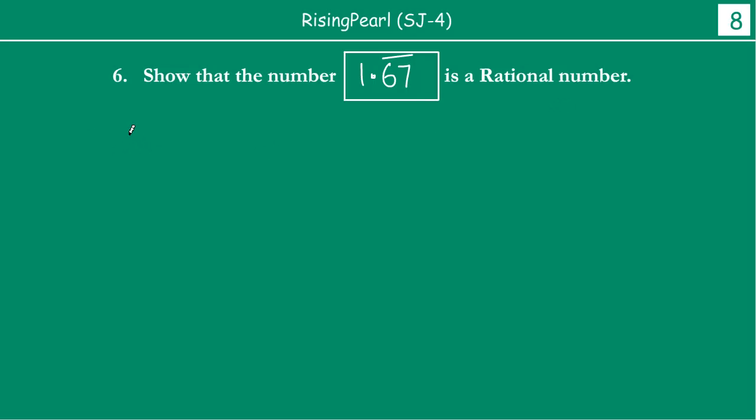So again, how are we going to handle this? We are going to say, well, let x equal 1.67 bar, and this means it is like 1.676767... goes like this. Because the bar here is not only 7, it is not only 6, it is both 6 and 7. So we know what it means is that the 67 digits are repeating.